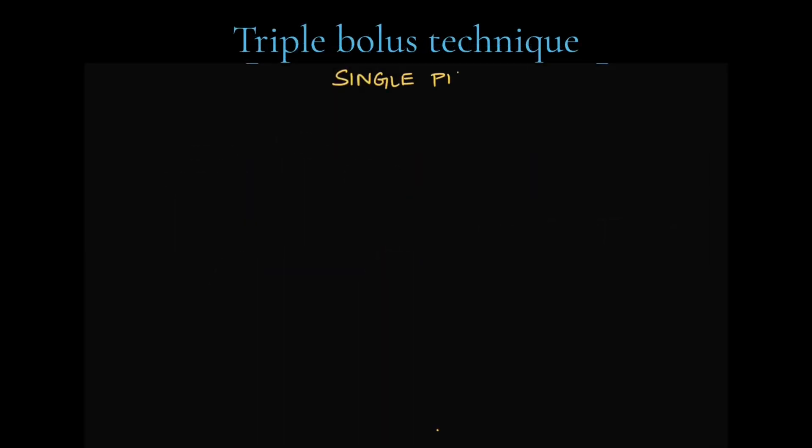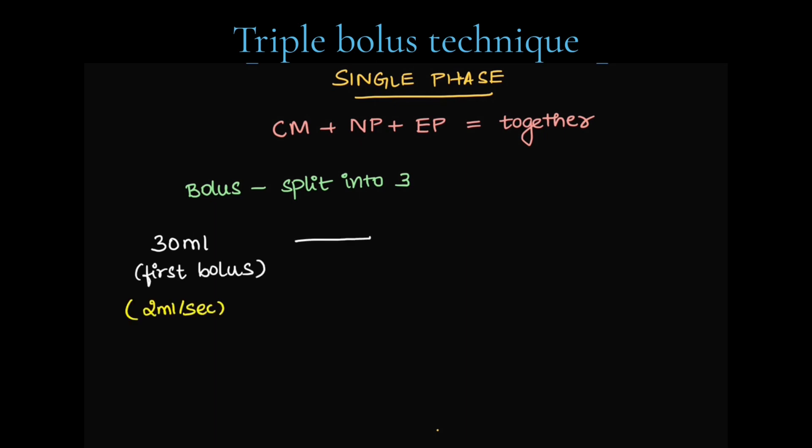Next, we have modification of this split bolus that is triple bolus technique. In which we use a single phase. That is, corticomedullary, nephrographic and urographic or excretory are all combined together. The bolus is split into three parts. First, we give 30 ml bolus at 2 ml per second. After 7 minutes, we give 50 ml bolus that is the second bolus. This we give at the rate of 1.5 ml per second.